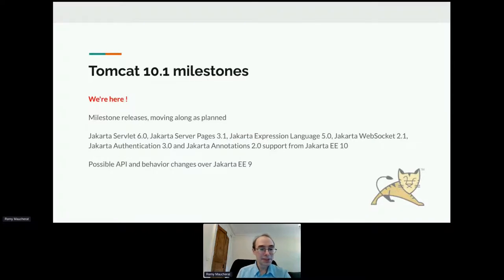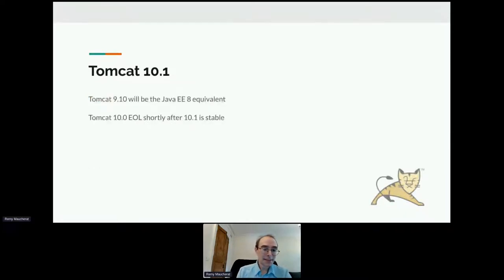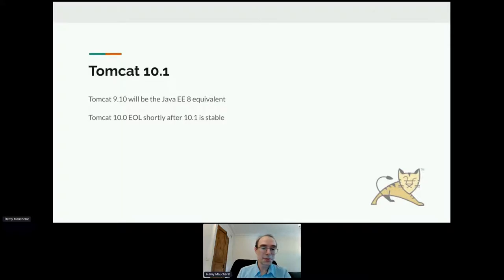We are doing 10.1 milestones with the first support for Jakarta EE 10 as features are being added. There are API and behavioral changes over Jakarta EE 9 — in particular, removal of all deprecated items from the Servlet API. We expect Tomcat 10.1 to become stable, after which we'll EOL Tomcat 10.0. We'll have a companion Tomcat 9.10 release — the same as 10.1 but with support for the old Java EE specification for Servlets, allowing all other APIs and features to be identical.